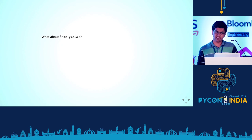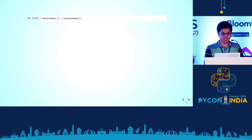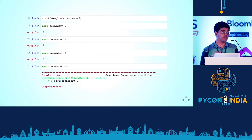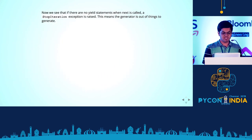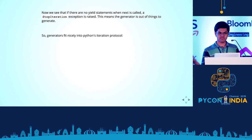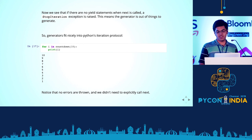You could just as easily write a generator with finite yields — like this one, which just counts down from some n, and then there are no more yields. The first three calls to next give 3, 2, 1. If you call next again, it raises a StopIteration. So when there are no more yield statements — nothing left to generate — it raises StopIteration. This fits perfectly into the iteration protocol, so you can stick a generator in a for loop and it will work beautifully. No errors thrown, you don't need to bother calling next every time.